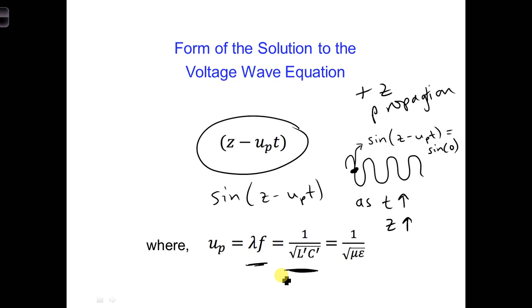And you can look back on section three of notes two, and you'll notice that the following relation holds for all TEM transmission lines. So this is for TEM transmission lines, which is what we're dealing with in this class. So up is also equal to one over square root of mu epsilon.